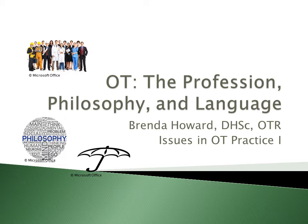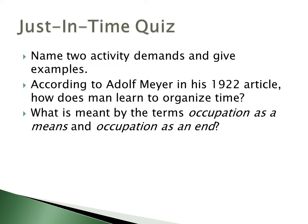Before we get into the main content, let's look at our just-in-time quiz. We talked about naming two activity demands and giving examples — that is from the OT Practice Framework. Table 7 lists activity and occupational demands, things like the time it takes to do an activity, the space required, and the physical demands required of the person.